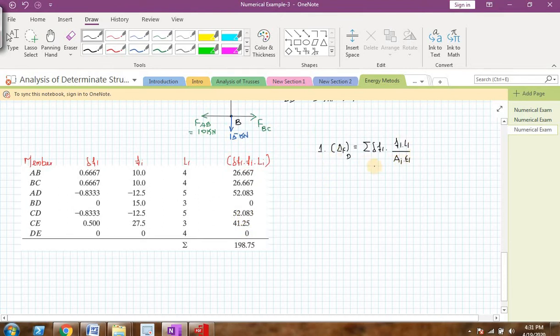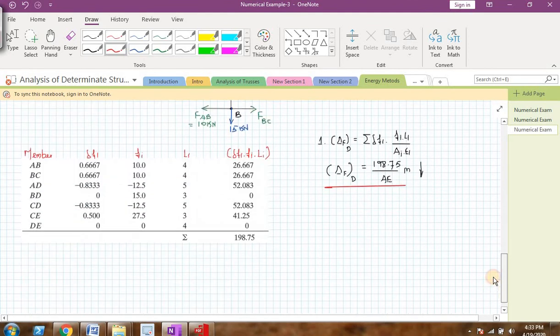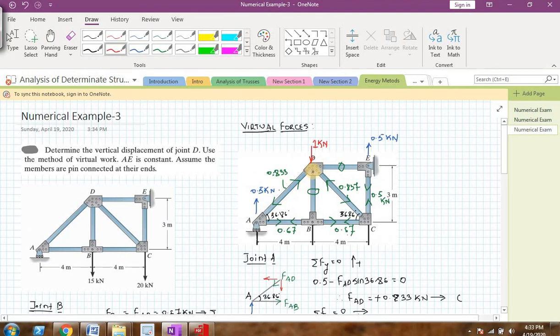I can remember this equation of virtual work principle that is 1 times delta f. I want the deflection at point D that is why delta f at D equals summation of delta f times f i l i divided by a i e i. In our case AE is a constant one. So I can write it as delta f at D is equal to, this is a summation 198.75 divided by AE. Once you put the value of AE, you can exactly get the value of deflection at joint D.